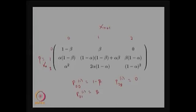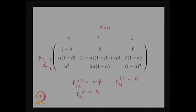Now consider P(1,0): the probability that the number of working machines is 1 at the nth step and 0 machines will be working at the n+1th step. This requires two independent events: the one working machine fails with probability alpha, and the repair crew does not finish the repair with probability 1 minus beta. Therefore P(1,0) = alpha times (1 minus beta).